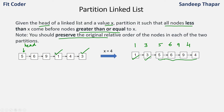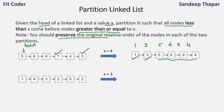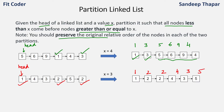So we need to partition it and also preserve the order. Let's take one more example. The head is at 1 and the value of x is 3. The nodes less than 3 are 1, 2, and 2, so these should come before the other nodes which are 4, 3, and 5. The output of this linked list is 1, 2, 2, 4, 3, 5. We kept all nodes less than 3 to the left and all remaining nodes to the right, preserving the order.